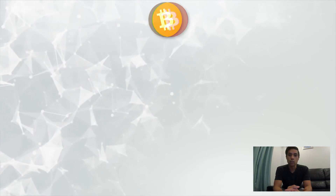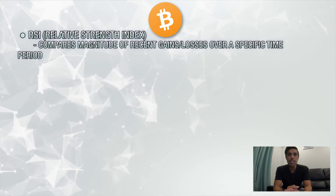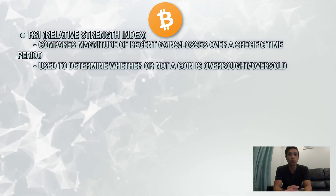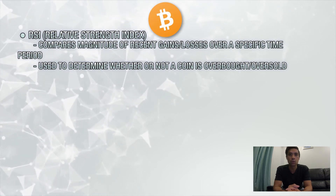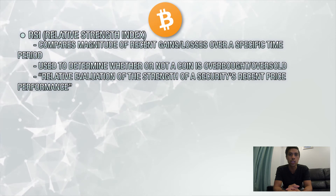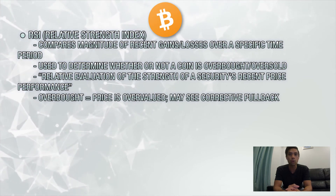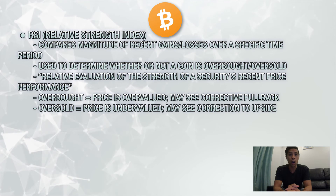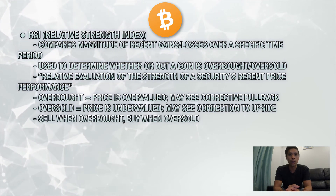The last indicator I'd like to go over today is called RSI, or Relative Strength Index. RSI compares the magnitude of recent gains and losses over a specific time period, and is used to determine whether or not a coin is overbought or oversold. According to Investopedia.com, the Relative Strength Index gives us a relative evaluation of the strength of a security's recent price performance. Simply put, a coin that's overbought means that its price is overvalued relative to its recent price, and that you may see a corrective pullback in price. Oversold means it's undervalued in price, and that a correction to the upside may be due. As a general rule of thumb, sell when a coin is overbought and buy when it's oversold.